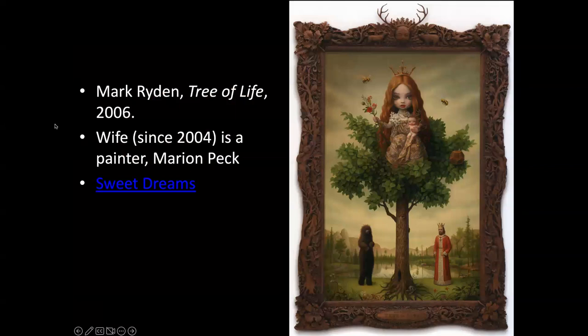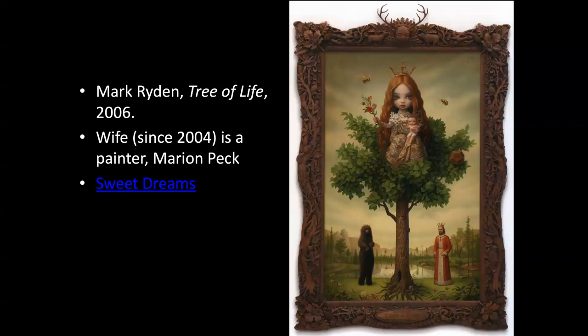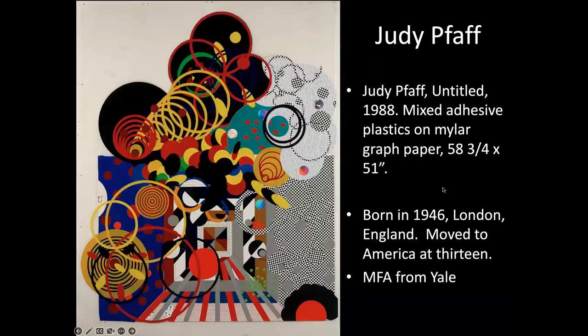This last one, Ghost Girl, really works with the frames themselves as part of the work of art rather than just something to house it. This is his Tree of Life. His wife since 2004 is also a painter, Marion Peck, who developed a similar style at around the same time as Mark Ryden but separately from him. They did a very strange stop animation short called Sweet Dreams — you might hate me after you watch it, but it's kind of cute and also disturbing at the same time, very much like the rest of Mark Ryden's work.